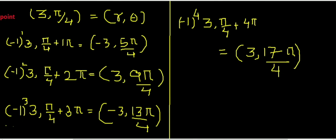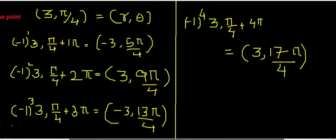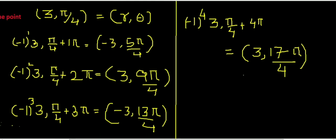So the computed values are: −3 and 5π/4 plus π; 3 and 5π/4 plus 2π; −3 and 5π/4 plus 3π; 3 and 5π/4 plus 4π.